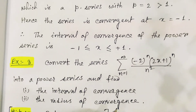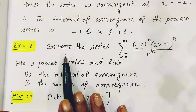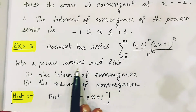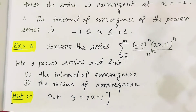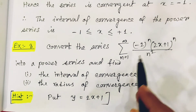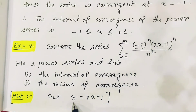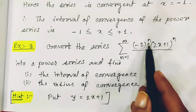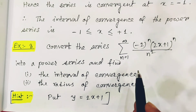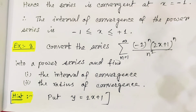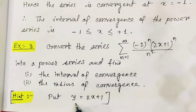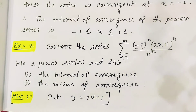One more example: convert the series into a power series and find the interval and radius of convergence. I'll give a hint — substitute y = 2x + 1, so the series becomes summation of (−2)^n y^n / n². Find the interval for the variable y first, then replace y by (2x + 1) to calculate the interval for x.